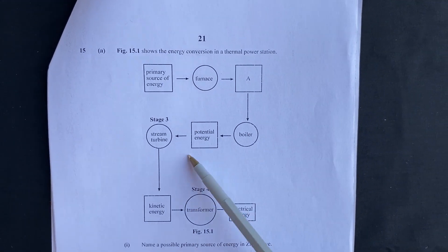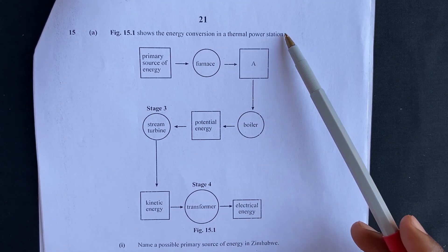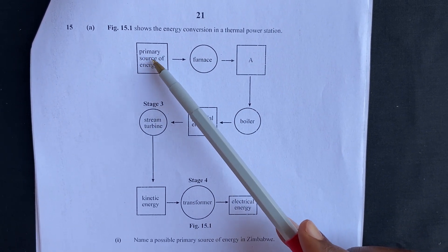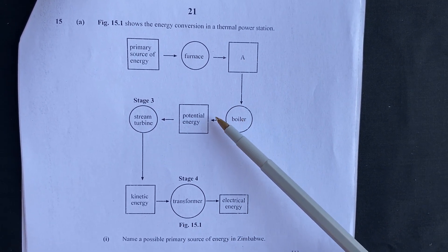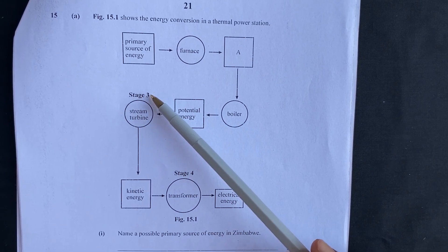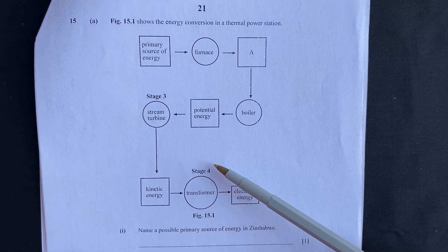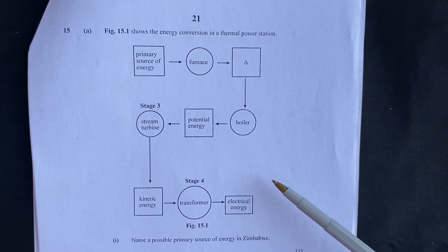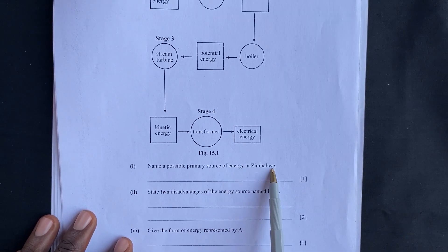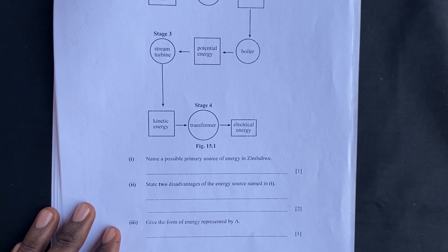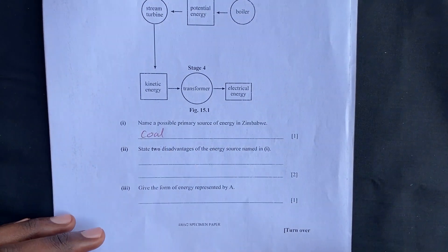Question 15: Figure 15.1 shows the energy conversion in a thermal power station — from the primary source of energy to the furnace, then to the boiler (potential energy), then to the steam turbine (kinetic energy), then through a transformer (stage 4) to electrical energy. Item 1: Name a possible primary source of energy in Zimbabwe. For a thermal power station, a possible primary source is coal.